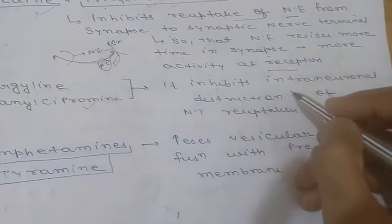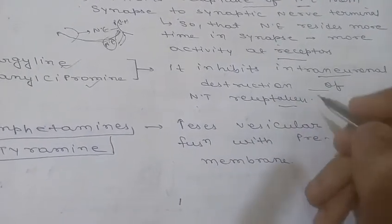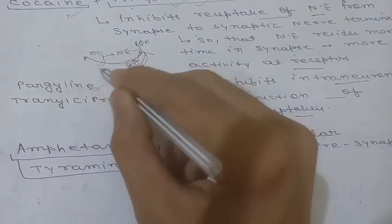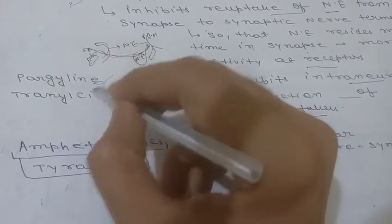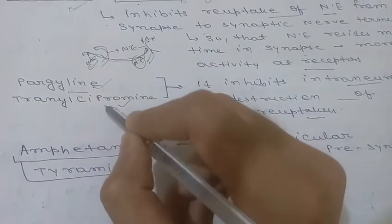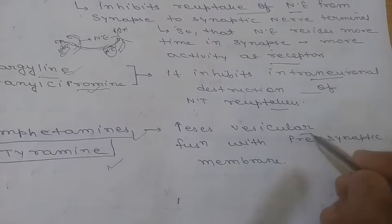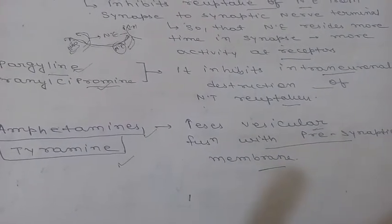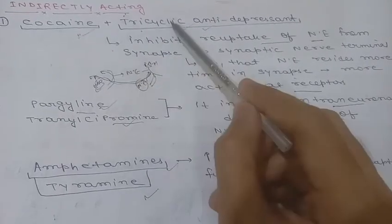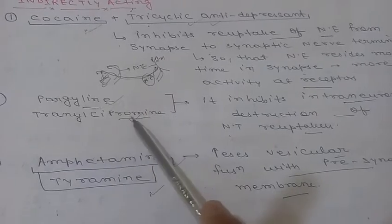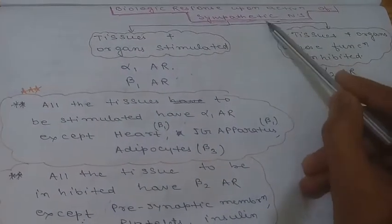Pargyline and tranylcypromine inhibit the intraneuronal destruction of reuptaken neurotransmitter — they inhibit monoamine oxidase present on mitochondria, preventing norepinephrine breakdown. Amphetamines and tyramine increase vesicular fusion with the presynaptic membrane, leading to increased norepinephrine secretion. These are the key indirectly acting sympathomimetic drugs.